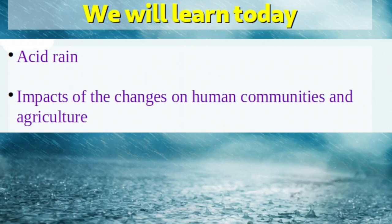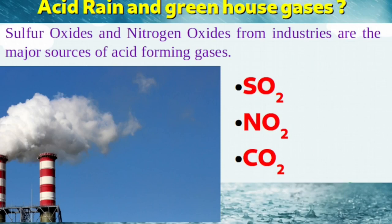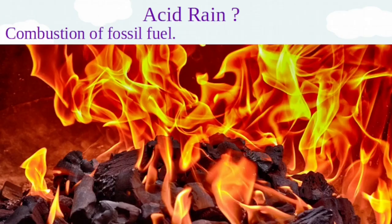We all know that due to anthropogenic activities, there is an increase in the concentration of greenhouse gases in the air. Among them, oxides of nitrogen and sulphur affect another natural process — rain. Sulfur oxides and nitrogen oxides originating from industrial operations and fossil fuel combustions are the major sources of acid-forming gases.